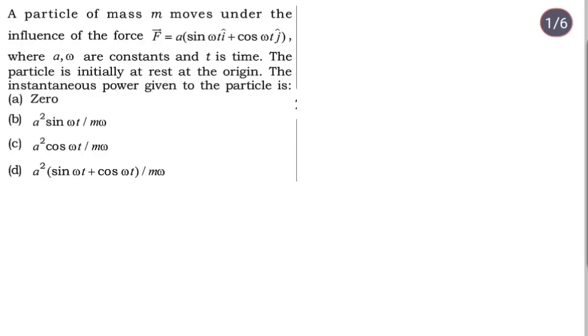Hello students, we have a question. A particle of mass m moves under the influence of the force F vector equal to a(sin ωt i cap + cos ωt j cap), where a and ω are constants and t is time. The particle is initially at rest at the origin. The instantaneous power given to the particle is question mark.